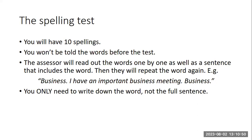At any time, you can ask the assessor to verify something, repeat something if you didn't quite catch it, or slow down. For instance, if the first word on your list is 'business', the assessor would say: 'Word one — business. As in, I have an important business meeting. Business.' You only need to write down that word; you don't need to write down the full sentence.